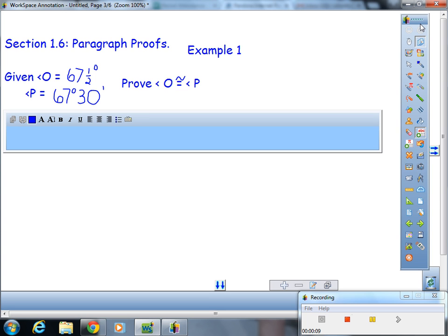That's all you have to remember, and then make a logical argument based on the writing or English background that you already have. So Example 1 is pretty simple. Angle O is 67 and a half degrees, angle P is 67 degrees and 30 minutes. We have to prove that angle O is congruent to angle P. All we have to do is make a logical argument. We know that there are 60...